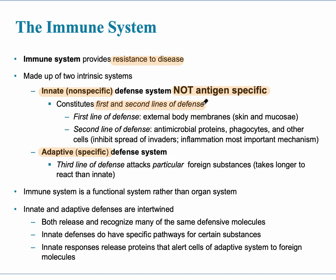A good way to think of the innate system is that it's more generalized and we're born with it — it doesn't have to specifically recognize a foreign invader. The first line of defense is the external body membranes, specifically the skin and the mucosa. The second line of defense includes antimicrobial proteins, phagocytes, other cells, and importantly, inflammation.